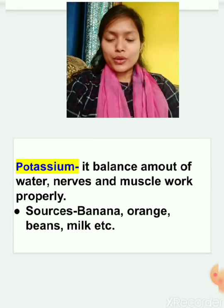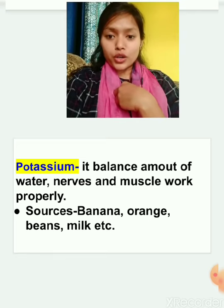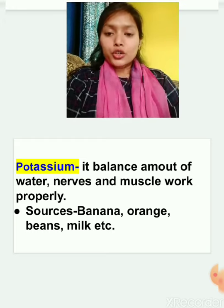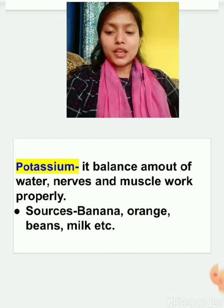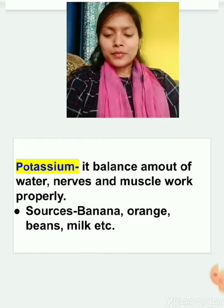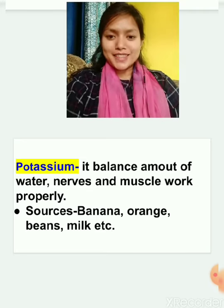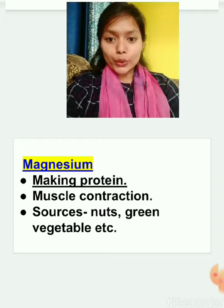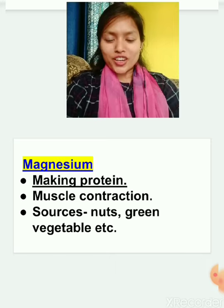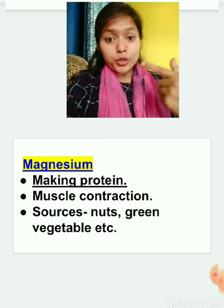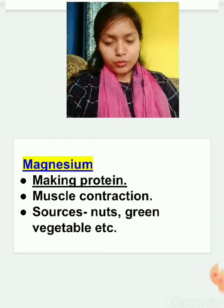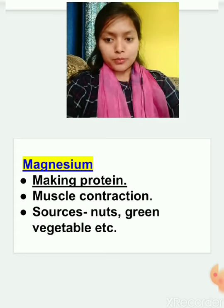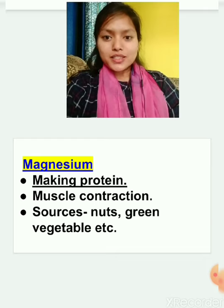The next mineral is potassium. Potassium balances the amount of water in our body and helps our nerves and muscles work properly. Sources of potassium are banana, orange, beans, and milk. Magnesium helps in making protein inside our body and aids in muscle contraction. Magnesium is important because protein is a bodybuilding nutrient. Sources of magnesium include nuts and green vegetables.